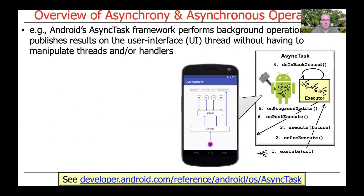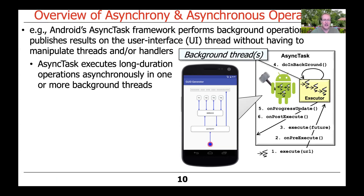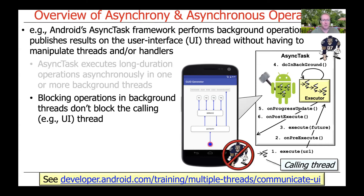One interesting example of asynchronous programming, although it's been deprecated more recently, is Android's AsyncTask Framework. It's a cool framework that performs background operation processing where background tasks can publish results on the user interface thread without having to manipulate threads or handlers directly. As a programmer, you say here's my AsyncTask, execute it, and it runs long-duration operations asynchronously in one or more background threads. Even if those threads block on IO, a synchronizer, or a complicated database query, the user interface thread is not blocked while the background computations run.